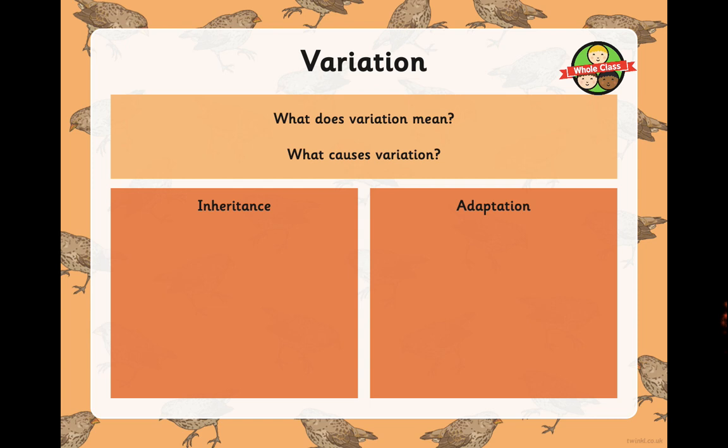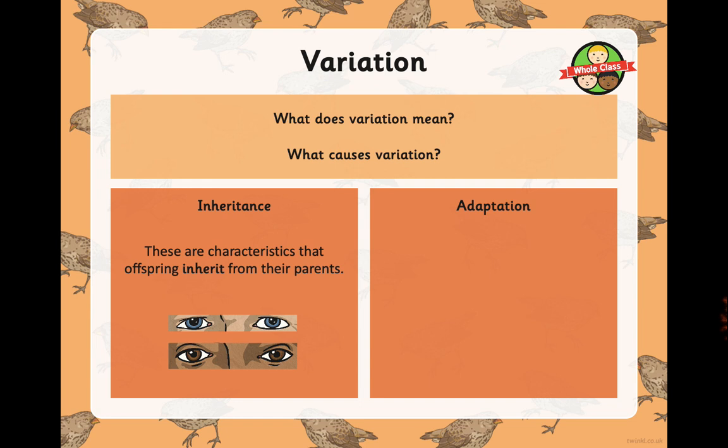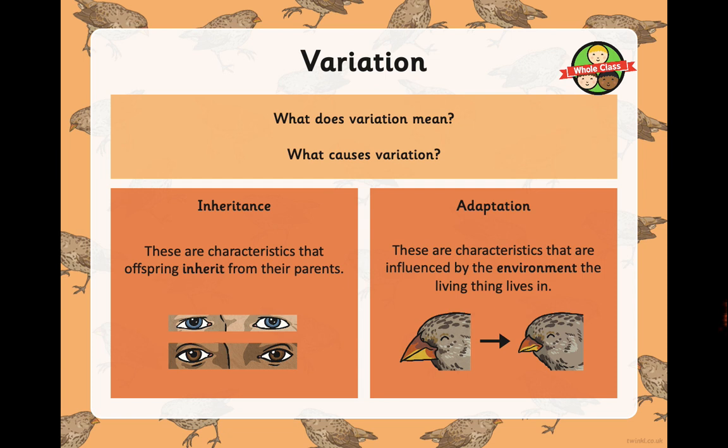On to adaptation. We touched a little on variation — in its most basic definition, variation means difference. In science, the things that cause variation are the combination of inheritance and adaptation. Inheritance refers to the characteristics that offspring inherit from their parents — eye colour, etc. Adaptation refers to characteristics that are influenced by the environment that the living thing lives in.